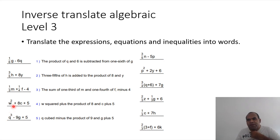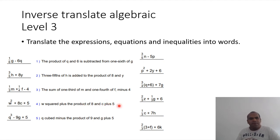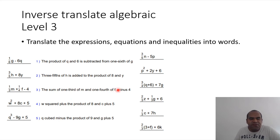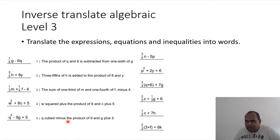'w squared plus the product of eight and c, plus five' — here you don't need the comma because the idea flows: the product and the sum of c plus 5. You feel when you need a comma — it's when you have a change of idea. For example, addition and then a difference (negative) — you need a comma. Next: 'q cubed minus the product of nine and g, plus five.'